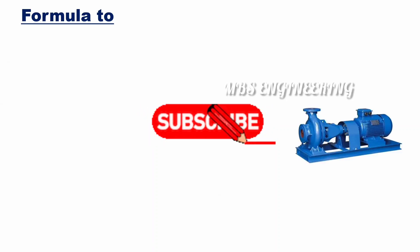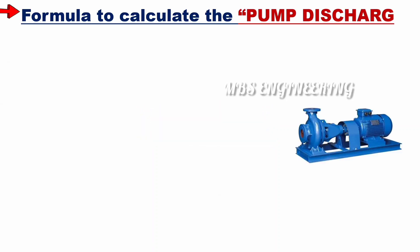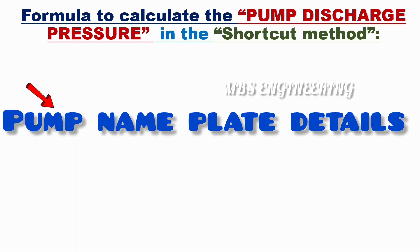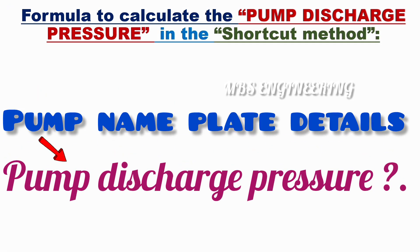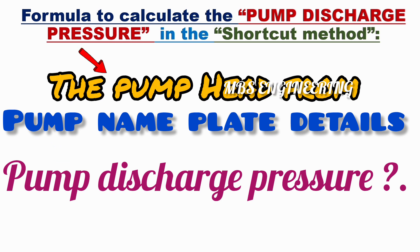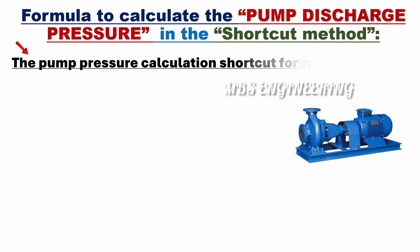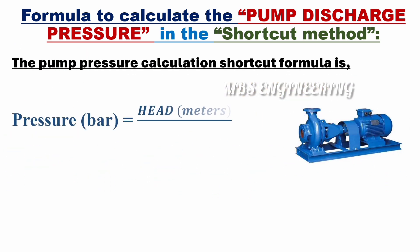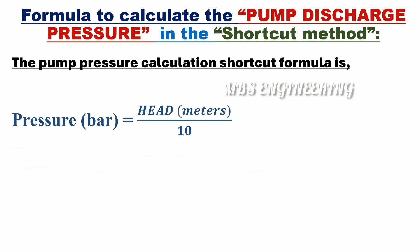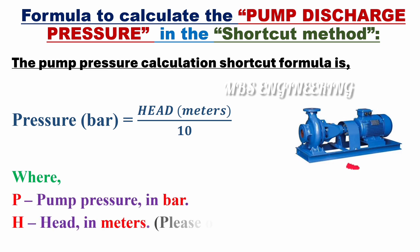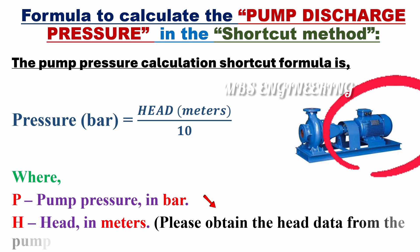We will learn the shortcut formula to calculate the pump discharge pressure using the pump nameplate details. The shortcut formula is: pressure in bar equals pump head divided by 10, where P is the pump pressure in bar and H is the head in meters. Please obtain the head data from the pump nameplates.